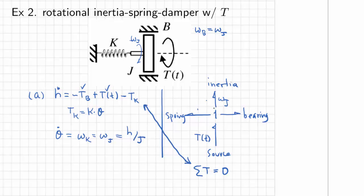By the spring being connected to this 1-junction — the common angular velocity junction — you can see in the graph that omega K equals omega J, and that gives you your second state equation. We're leaving out several steps of formal bond graph procedure, but this intermediate step should get you used to building graphs of systems and associating what you draw graphically with the equations.